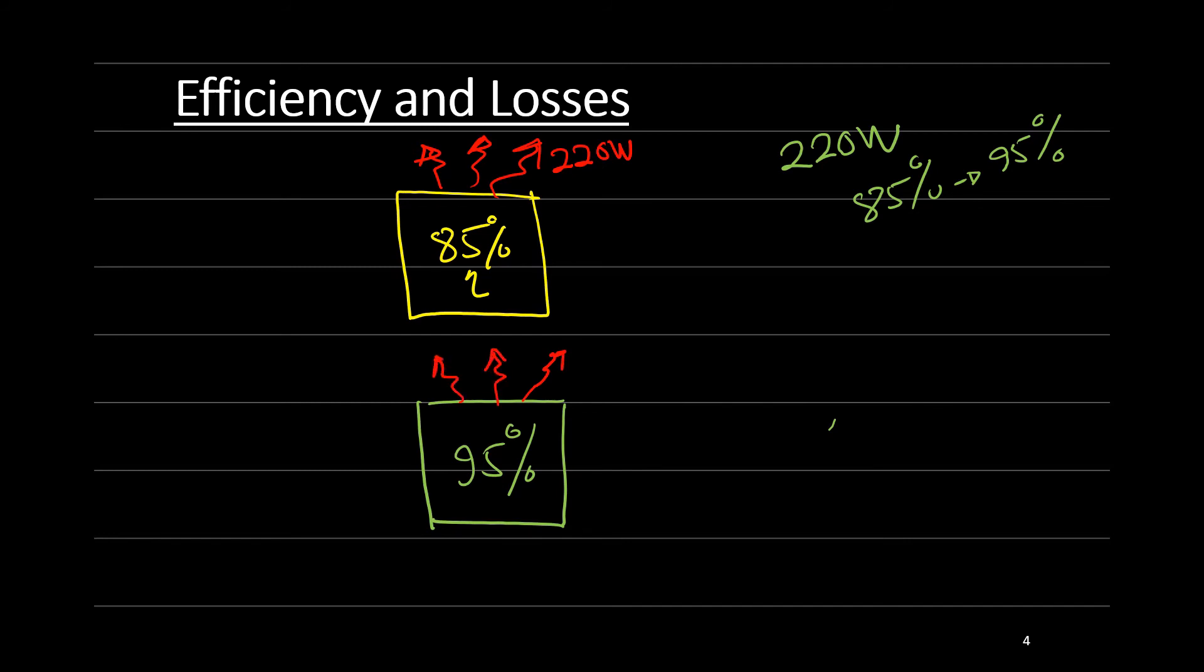But for some reason, these two converters, one has a better efficiency than the other. But both of them, let's say they use the same number of components. So they lose the same amount of power. And here we have the input power P in and P out.